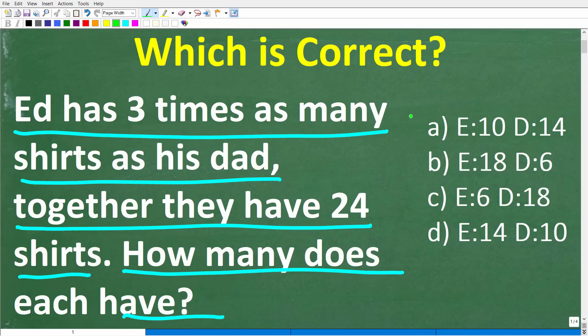Alright, so this is the problem, but we do have a multiple choice question here, and let's take a look at our answers. A is Ed has 10 and his dad has 14. B is Ed has 18 and his dad has 6. C is Ed has 6 and his dad has 18. And D is Ed has 14 and his dad has 10.